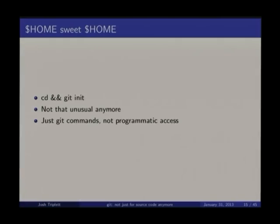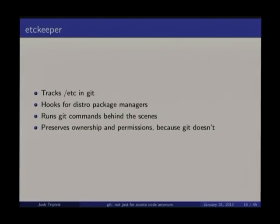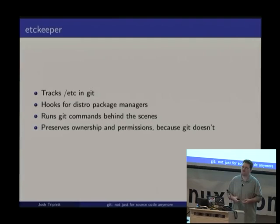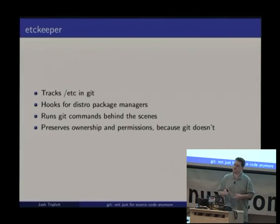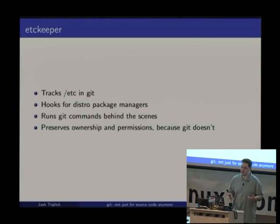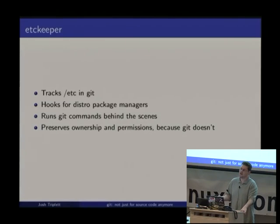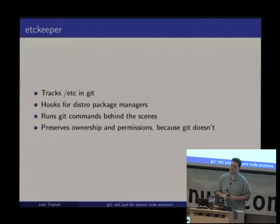When you're putting your home directory in Git, you're really just using a bunch of Git commands — not programmatic access — and half of what you store is text files. To make it more interesting, you have something like Etckeeper, which tracks the system-wide /etc directory in Git. It has hooks for distribution package managers like apt: when you run apt-get install, it will automatically commit those new config files with a commit message saying which packages were installed, removed, or upgraded. It also has hooks to track ownership and permissions, because Git doesn't track those.